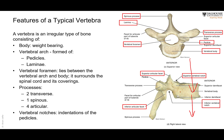Where vertebral bodies articulate with each other, there is fibrocartilage in between — the strongest type of cartilage in the body. The arch itself is formed of two parts: the pedicle, which is the portion of the arch between the body and the transverse process, and the lamina, which is the flat portion between the transverse process and the spinous process. So: pedicle + lamina + lamina + pedicle = the arch.